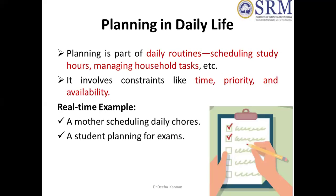In day-to-day life, some examples: a mother wants to schedule daily chores. There are a lot of activities to be done, and the sequence in which they are planned is important. For example, early in the morning, before school, the food has to be ready for the children — each activity has its own timing. Another example is a student preparing for a semester examination. We have a lot of subjects to study; some might be halfway prepared, some not touched at all. During study holidays, we plan — someone might take easy subjects first, check them off, and go on. This is planning in daily activity.